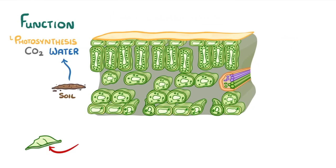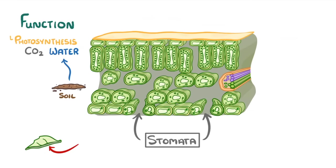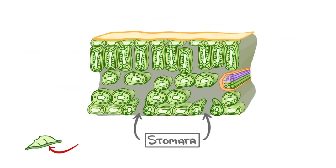The water comes from the soil and is transported to the leaves via the roots and xylem, as we'll see in the next video. But the carbon dioxide diffuses directly into the leaf from the outside air through lots of little holes called stomata. Each leaf will have thousands of these stomata, and they're scattered through the lower epidermis, which is a layer of epidermal tissue.